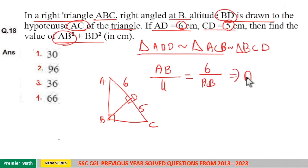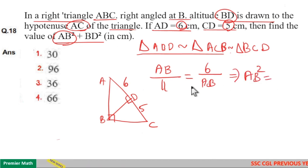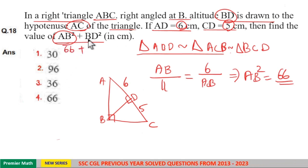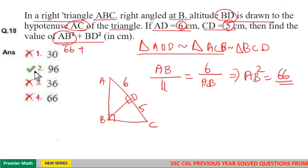If AB² is 66, you can see, this means AB² + BD² should be greater than 66. Here, greater than 66 is option 2, that is 96, which means BD² is 30.